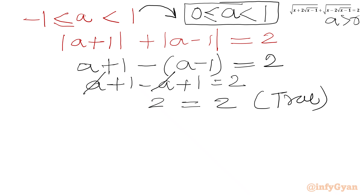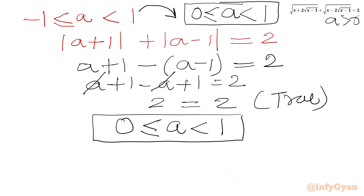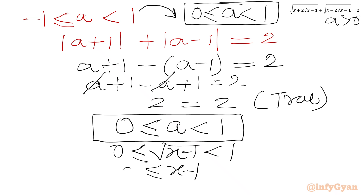So from Case 2 we take the result: a satisfies 0 ≤ a < 1. Since a = √(x−1), we have 0 ≤ √(x−1) < 1. Squaring, we get 0 ≤ x − 1 < 1. Adding 1 to the inequality gives 1 ≤ x < 2. So the result from Case 2 is 1 ≤ x < 2.